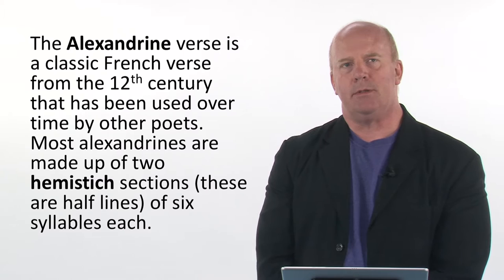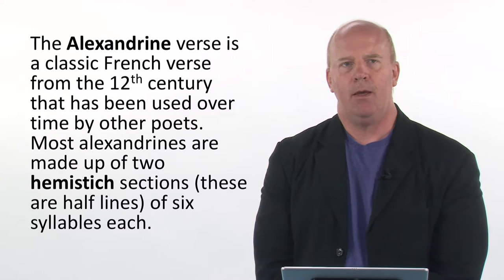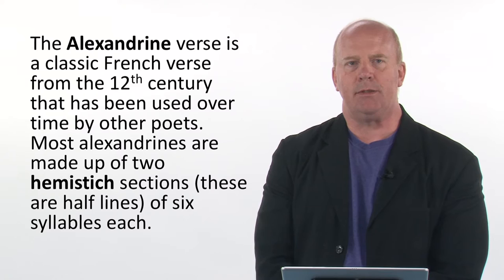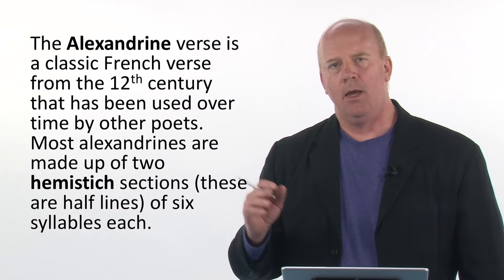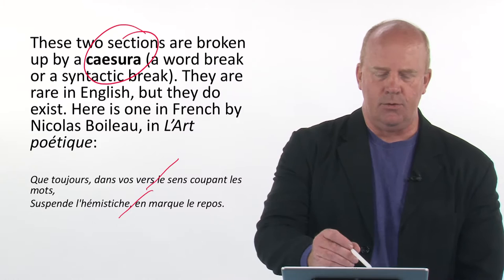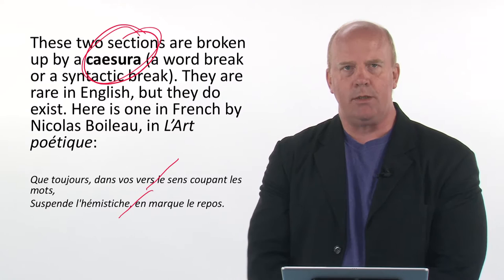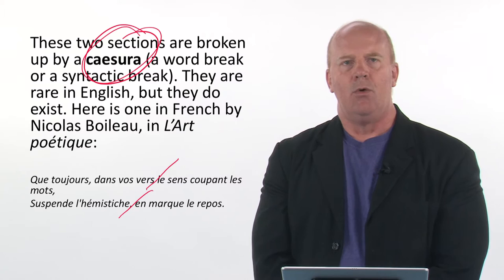Let's take a look at some other types of verses. We've got the Alexandrine verse, which is a classic French verse from the 12th century. It's been used over time by other poets. Most are made up of two hemistichs — sections of half lines of six syllables each. In one verse you have six syllables, then a break, and six more syllables. These two sections are broken up by the caesura. These are rare in English but they do exist.